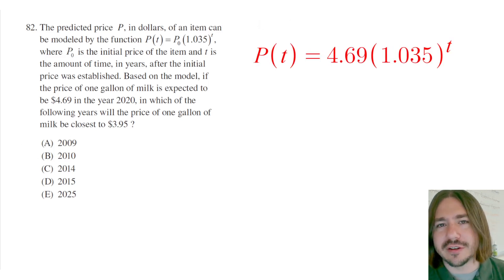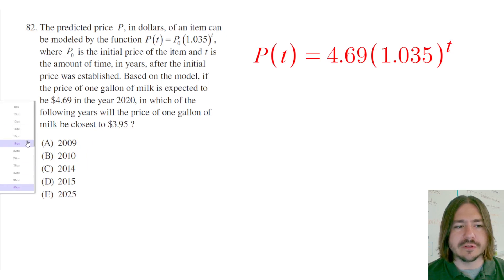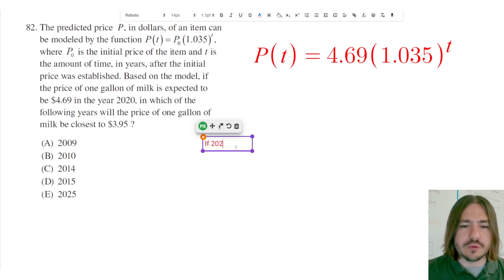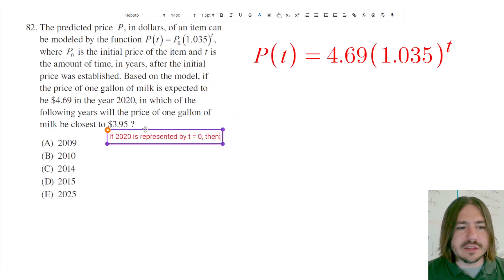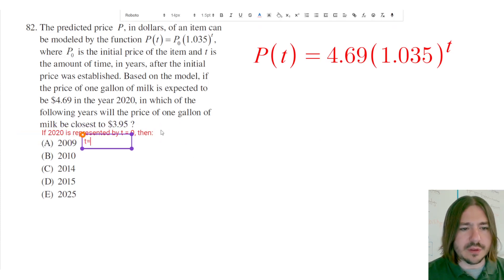Now, depending on your level of comfort solving an equation where you have a variable in the exponent, it may be easier just to go ahead and plug in these different t values. So if 2020 is represented by t equals 0, then let's come up with a t value for each one of these years. So 2009, that's 11 years before 2020, so for choice A, t would be negative 11.